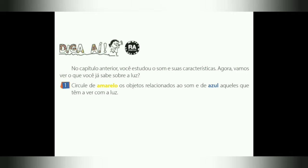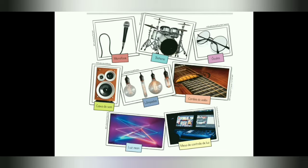Seção 'Diga aí'. No capítulo anterior, você estudou o som e as suas características. Agora, vamos ver o que você já sabe sobre a luz. Questão de número 1: circule de amarelo os objetos relacionados ao som e de azul aqueles que têm a ver com a luz. Nos objetos abaixo, vocês estarão circulando com lápis de cor amarelo os objetos relacionados ao som e de azul os que têm relação com a luz.